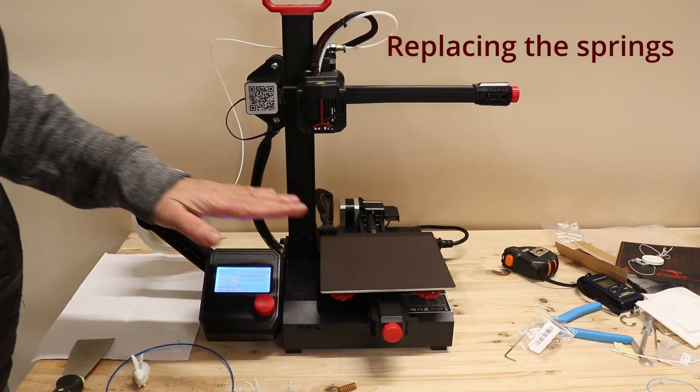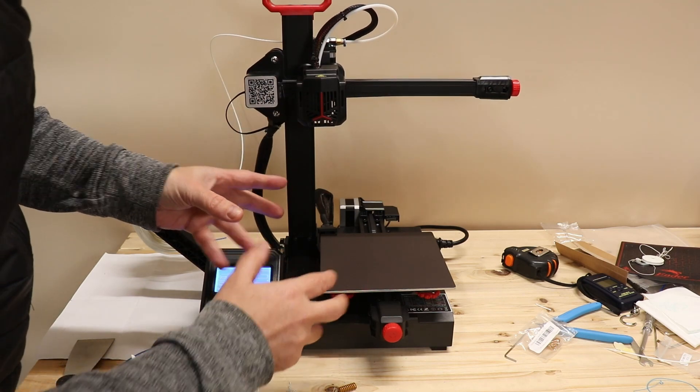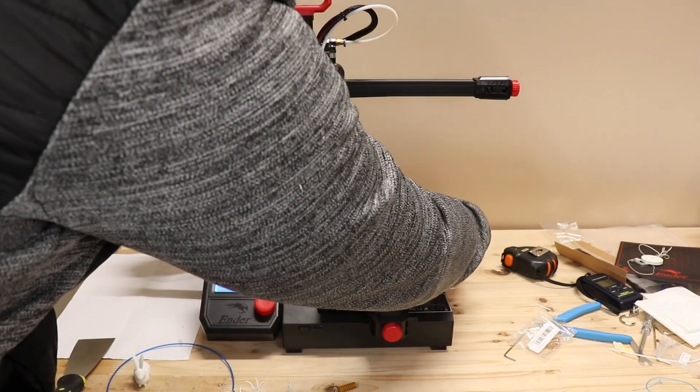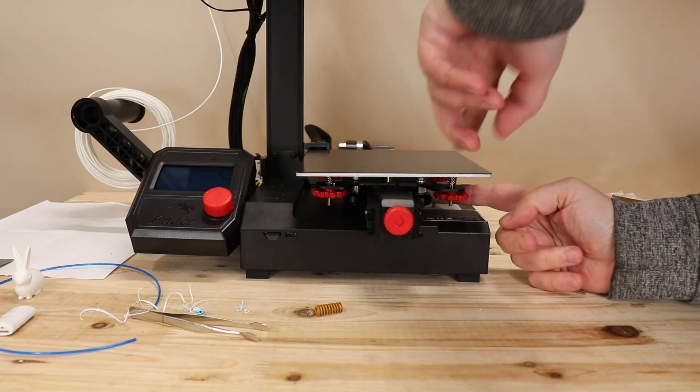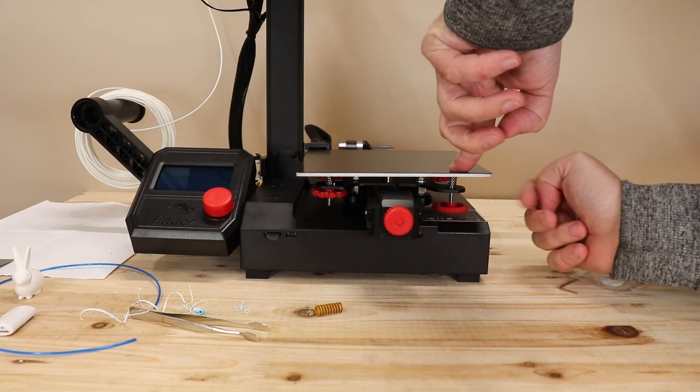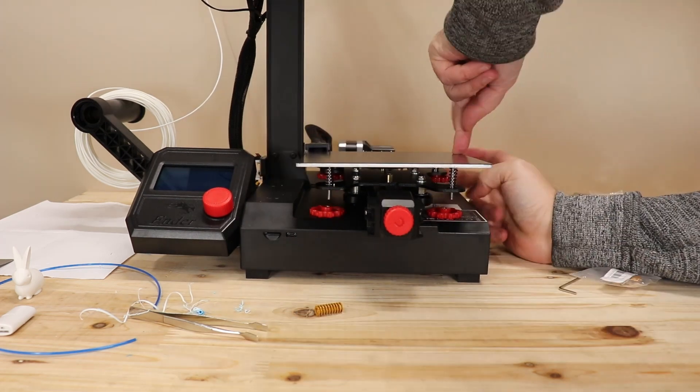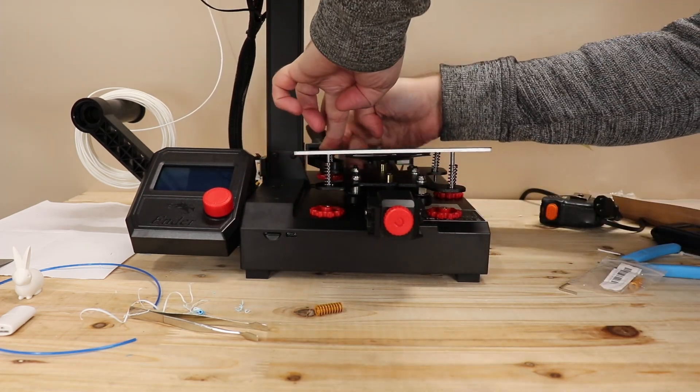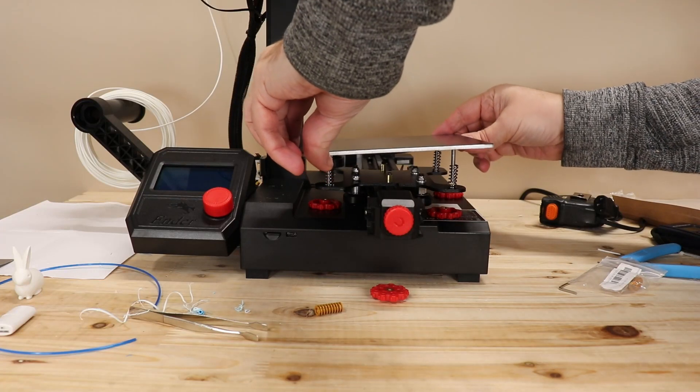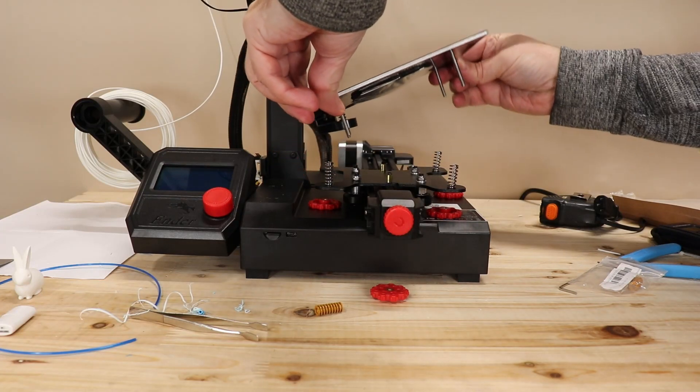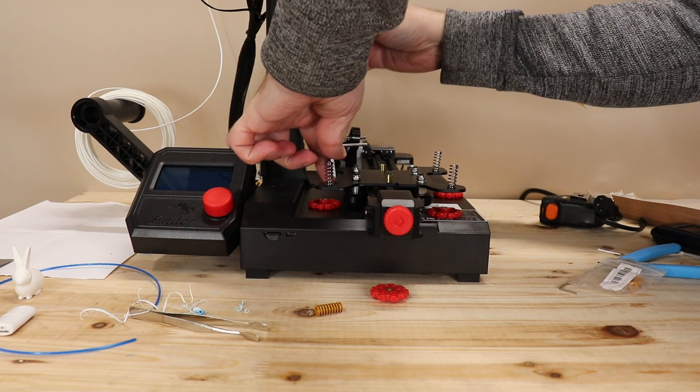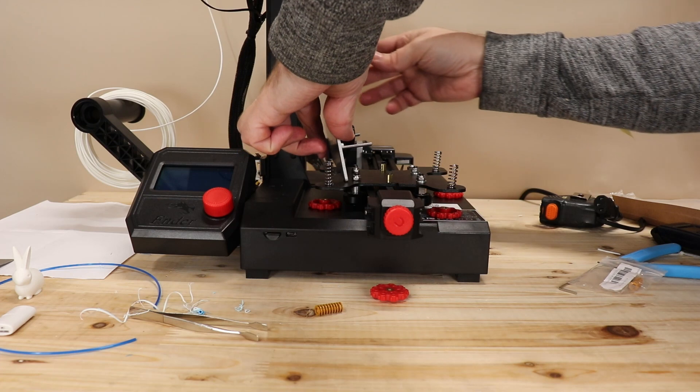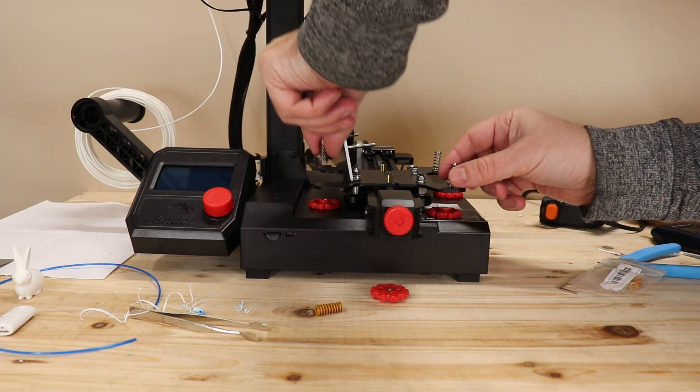In the first step move the z-axis higher. It will be easier to operate below it. Then you can turn off the printer and remove the power cable. Then remove all four knobs. And then remove the bed and just place it here on the side. Springs are here in place.